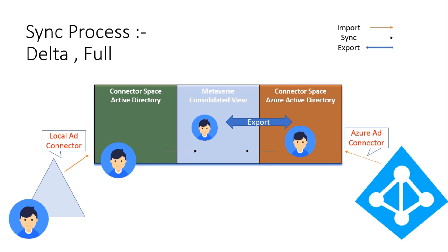When this export process completes, if you search for this object in the connector space, you will find an acknowledgement flag called 'awaiting export confirmation'. This means the information has been sent from the Azure AD connector space to Azure AD, but it has not yet been acknowledged as imported into Azure AD. To verify that the object was successfully imported, you can run an import on the Azure AD connector, and that 'awaiting export confirmation' flag will be removed from this user object.